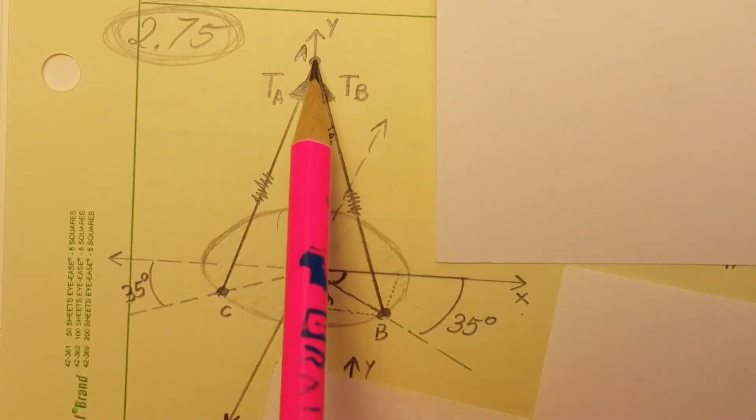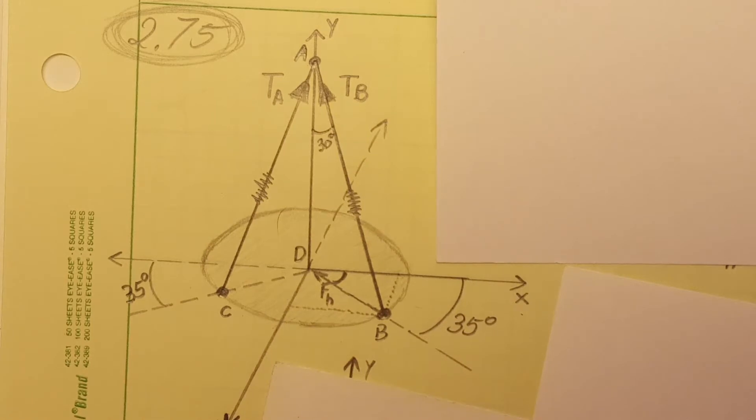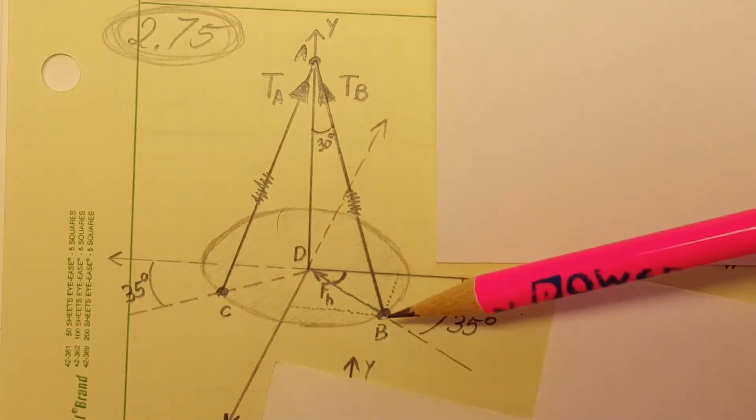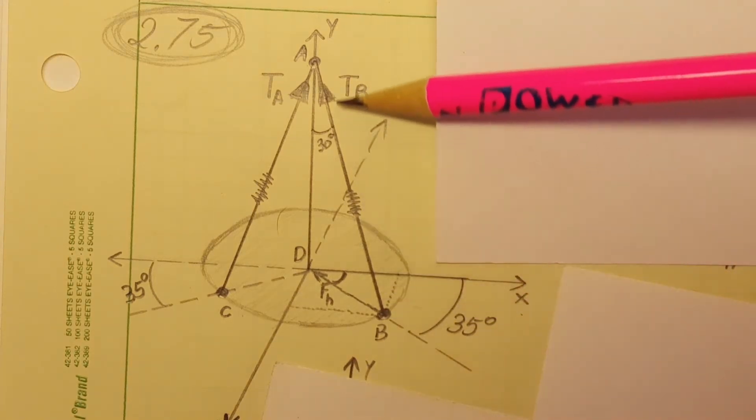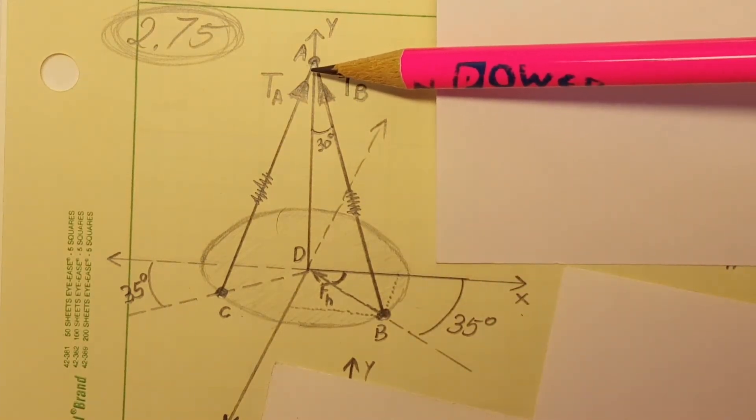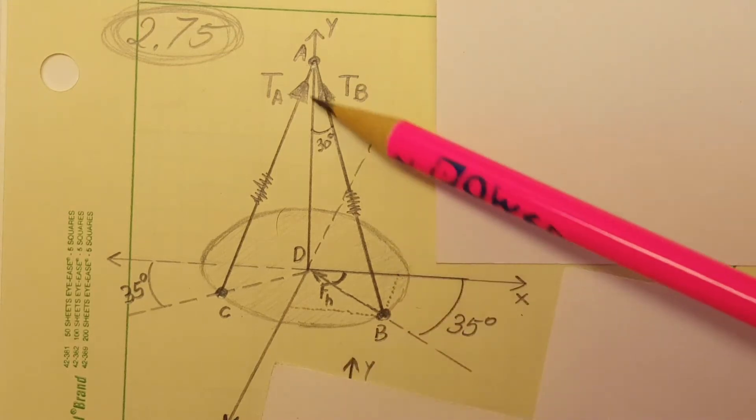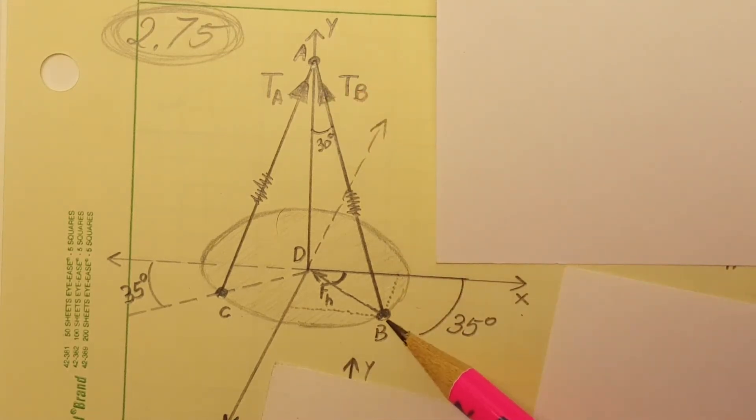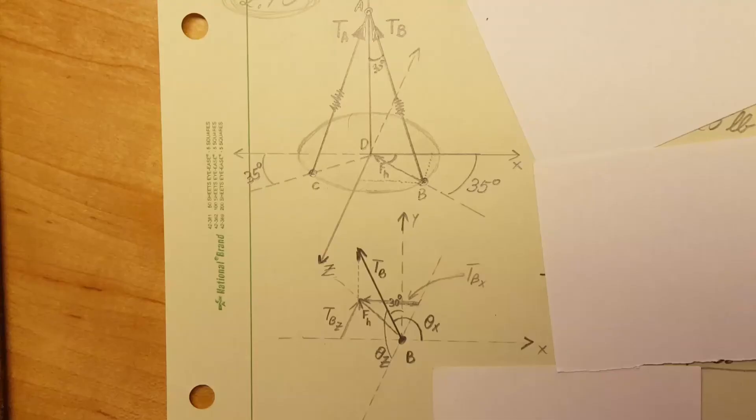They want us to find the components of this vector which is from point B all the way up towards point A. They want us to find its component and also the angles that define the force that comes from point B upwards.